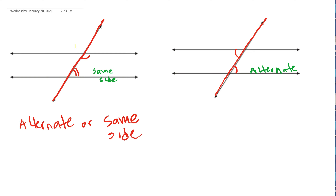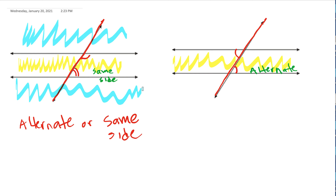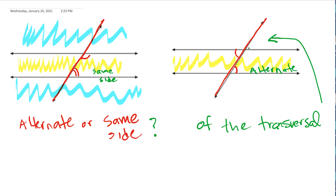Next we're going to look at the parallel lines and whether angles are inside or outside — interior or exterior. I like to color the interior to highlight the portion in between the parallel lines. So when looking at an example, we ask: is this angle in the yellow highlighted interior section, or is it outside in the blue highlighted exterior? So the first question is: are they alternating or same side of the transversal — the cutting line?